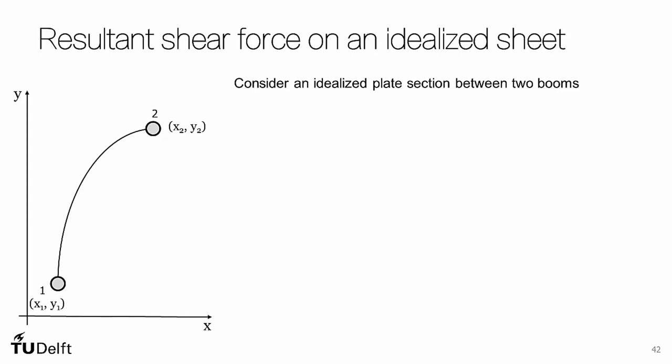Let's first look at the resultant shear force on an idealized sheet. Here you can see a generalized curved sheet between booms 1 and 2, with boom 1 at coordinates x1, y1 and boom 2 at x2, y2 within our x-y coordinate frame.